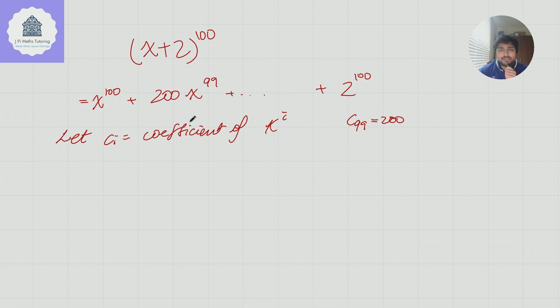And my goal here is to work out the maximum value of c_i. Let's firstly write down a general expression for c_i, and we can use the binomial theorem to do this. What is a general expression for c_i? Well, it's going to be 100 choose i multiplied by 2 to the power of 100 minus i.